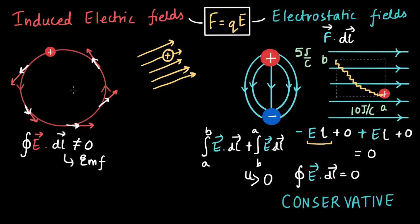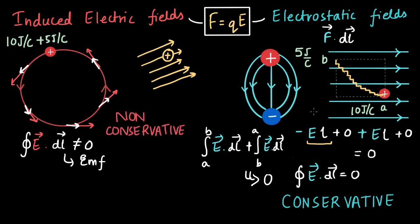For induced electric fields, if we move the test charge once around the loop, there is some net work done on it. If we start from a potential of 10 volts and the electric field does a net five joules of work around the loop, then when the charge returns to the same point it will have 15 joules of potential energy — making the potential there 15 joules per coulomb. Moving around the loop again would increase it further. So the idea of potential is meaningless for induced electric fields, and since mechanical energy is not conserved, induced electric fields are non-conservative.